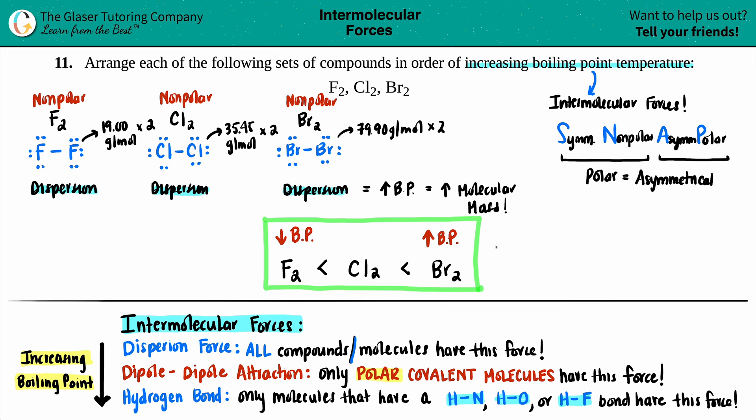And there's your rank of increasing boiling point temperature. Fluorine is the least. Bromine is the highest. They're all because of dispersion. You go by the molecular mass. I hope this makes sense. Let me know in the comments. Thank you so much for viewing the video. Subscribe to the channel if you want to help us out. And I hope you guys have a great day out there. Keep studying hard. Good luck on your tests and quizzes. I'll talk to you soon. Bye-bye.